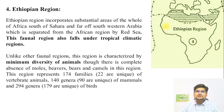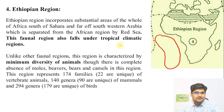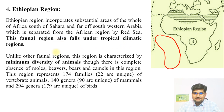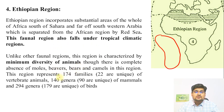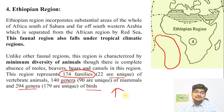The fourth region is the Ethiopian region. The earlier name for Africa was Ethiopia, and the adjoining ocean was called the Ethiopian Ocean. This region incorporates the substantial area south of the Sahara belt in Africa. The faunal region is entirely under tropical climate. The region represents about 174 families, 22 of which are very unique vertebrates. It has 140 genera of mammals and 294 genera of birds, showing great diversity.